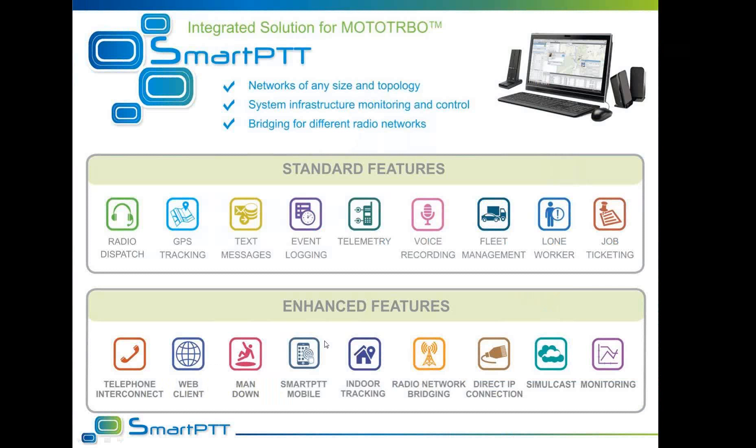SmartPTT is a highly customizable application that comes in several variants providing different sets of functionality for different systems. Interface with the radio system can be done via control stations or via IP connection to MotoTurbo repeaters. The dispatcher software gives the opportunity to control the flow of data and voice in a radio network, request location of subscribers, and monitor the state of repeaters. SmartPTT also provides tools such as a web client and file transfer software, and has functionality to connect to PBX for phone interconnection.